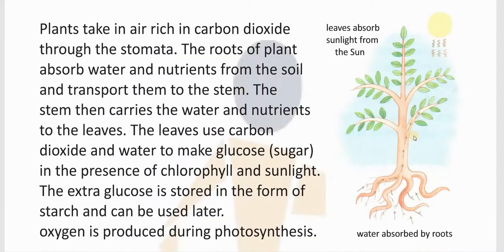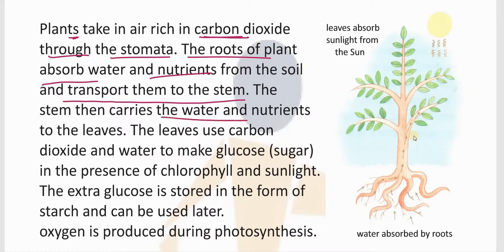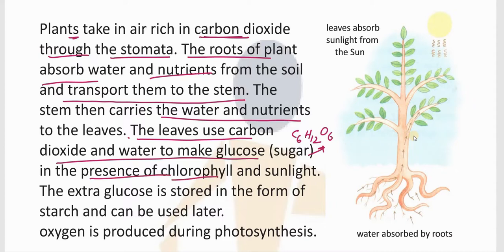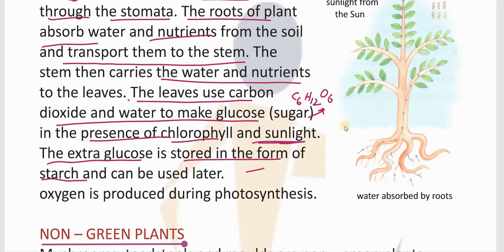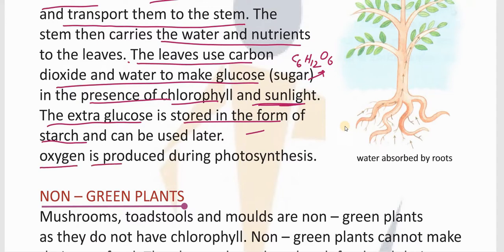Plants take in air rich in carbon dioxide through stomata. The roots absorb water and nutrients from the soil and transport them to the stem, which then carries them to the leaves. The leaves use carbon dioxide and water to make glucose — C6H12O6 — in the presence of chlorophyll, the green pigment that gives leaves their color, with the help of sunlight. The extra glucose is stored in the form of starch and can be used later. Oxygen is produced during photosynthesis — this is a very important topic.